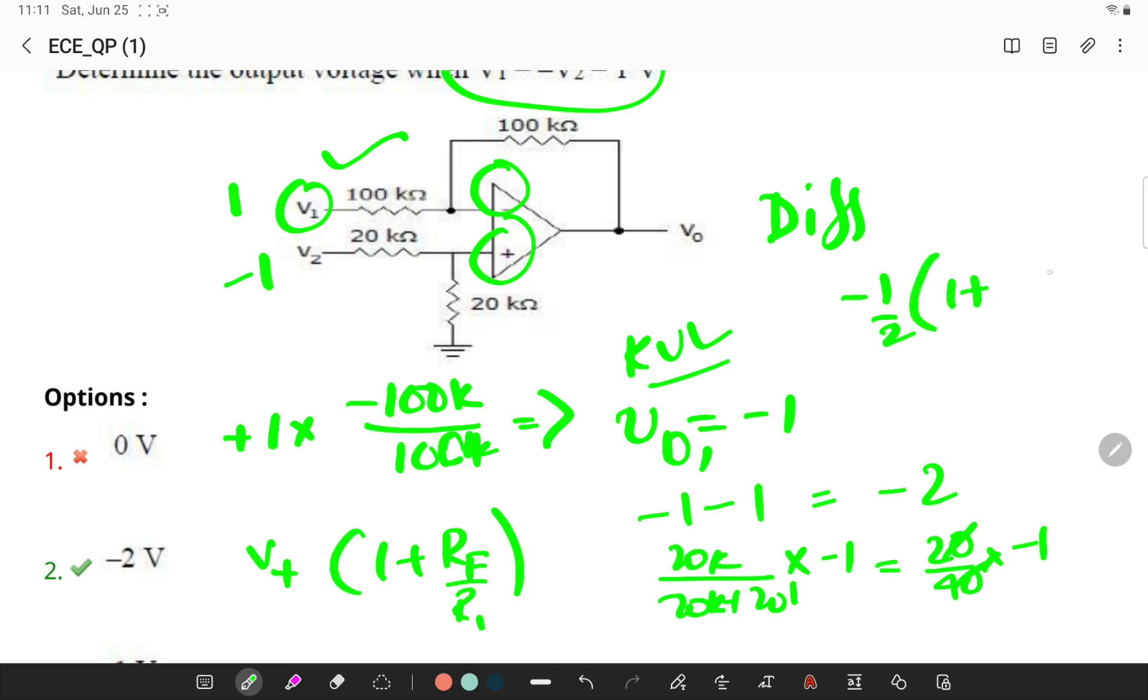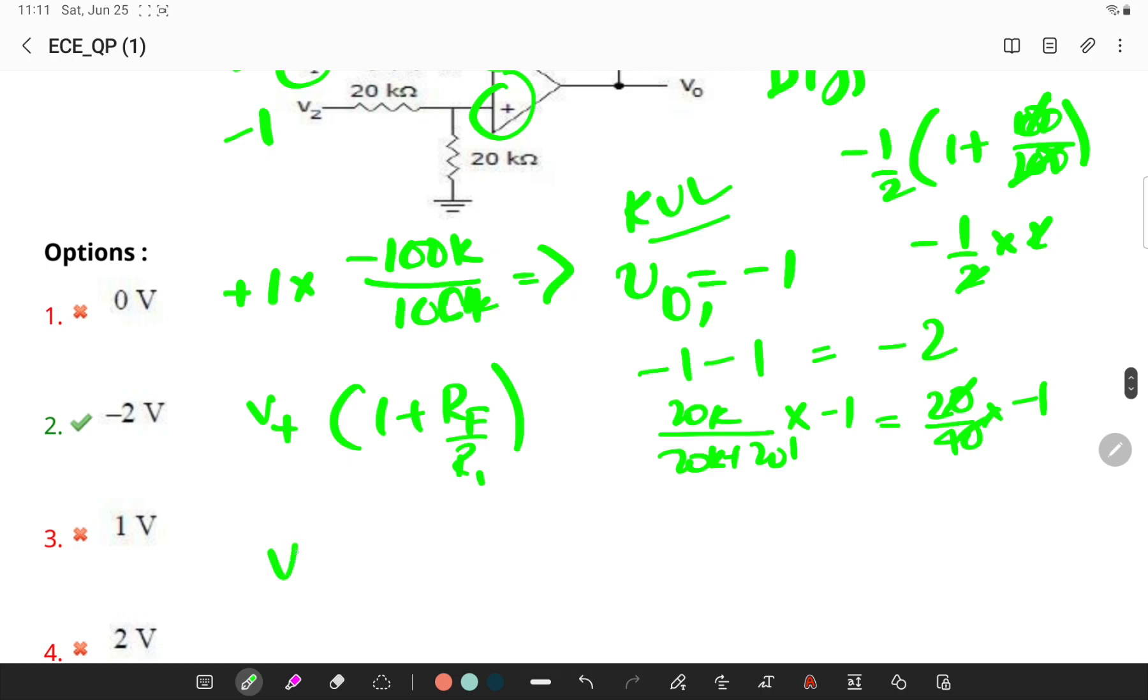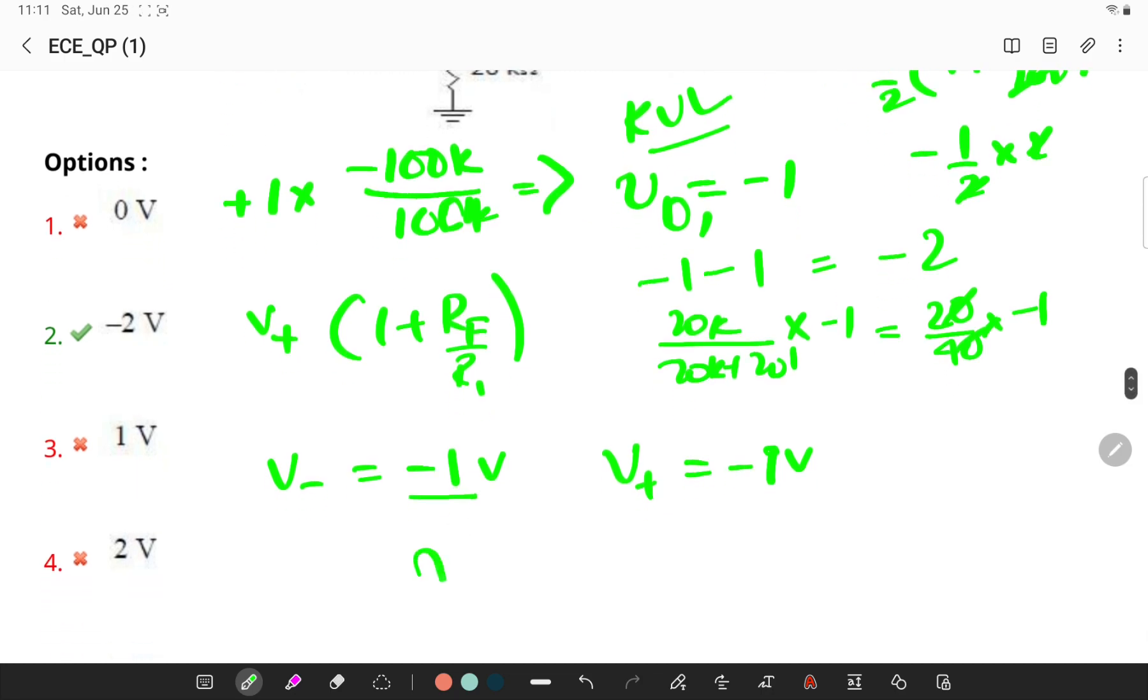Minus 1 by 2 into 1 plus 100 by 100. Minus 1 by 2 into 2. Due to the negative terminal, you will be getting minus 1 volts, and due to the positive terminal, you will be getting minus 1 volts. Using superposition theorem, V0 is nothing but V0 at negative input and V0 at positive input, which is minus 1 minus 1, which is minus 2 volts.